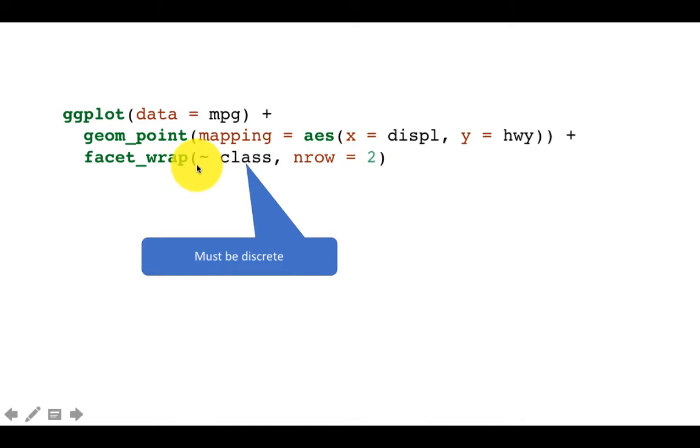Now clearly what you put under the facet wrap, that is the variable on which you are performing the facets, obviously must be a discrete variable. If you make it continuous then you will get an error from RStudio, from ggplot.